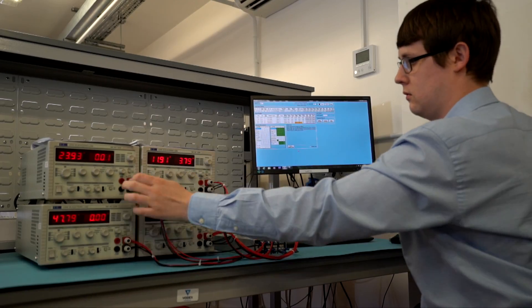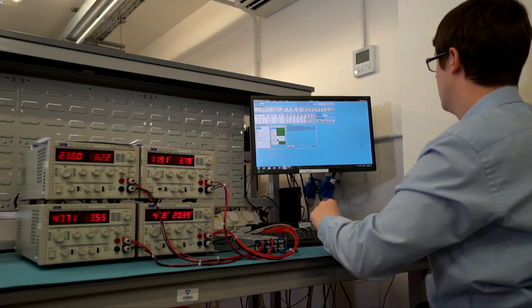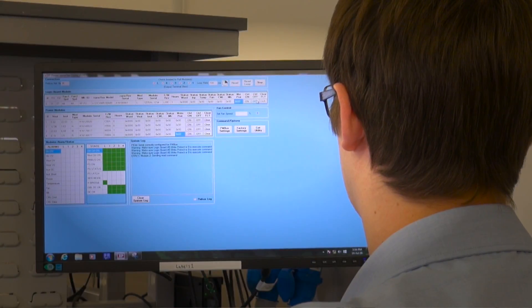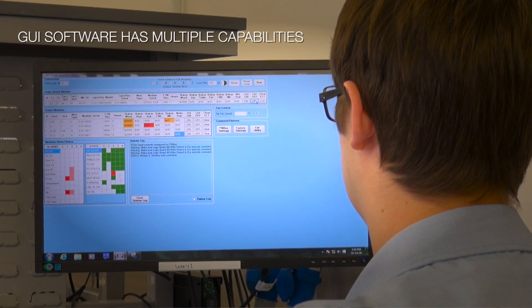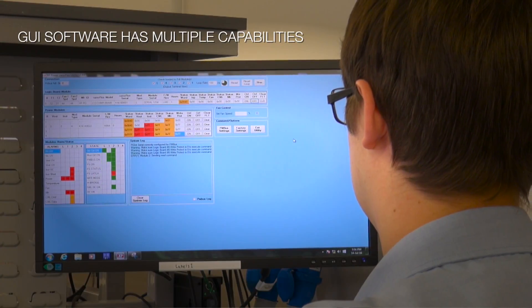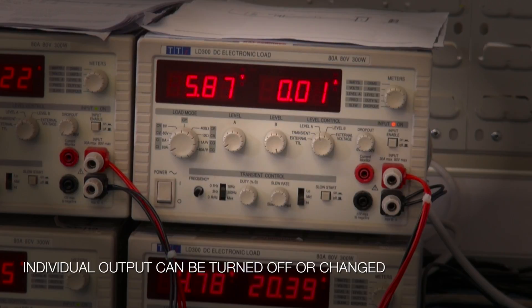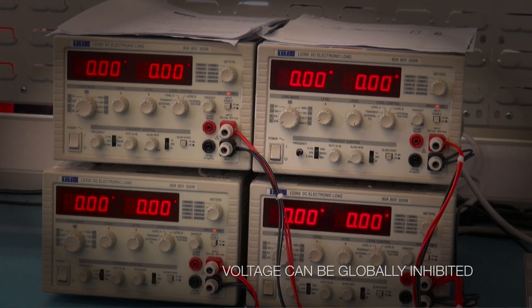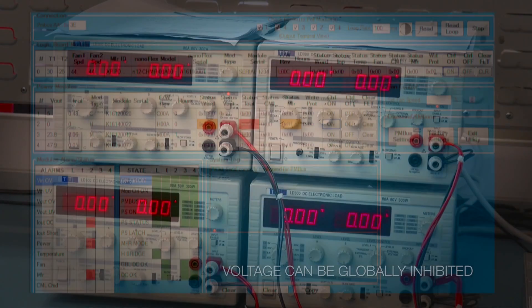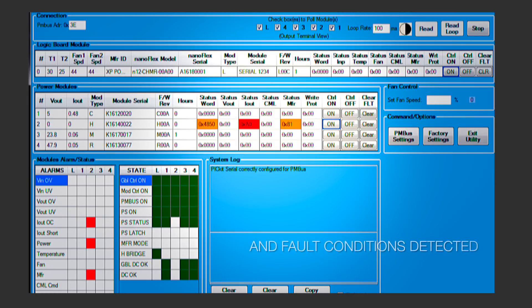As you can see here, we've also developed a graphical user interface or GUI for the product. What that does is it allows the customer to get our product and start using the features of it immediately without the need for them to develop code or digital programs to interface with the product. It's a brilliant development tool because it allows the customer to really tailor the product to their equipment. And at the end of that, even if they're not using digital control, they can tell us exactly what they need and we can configure that for them.